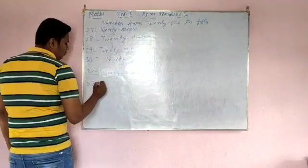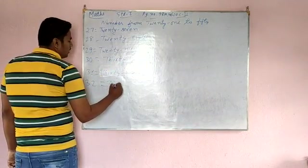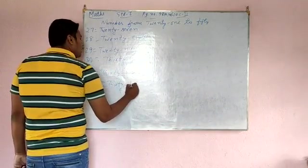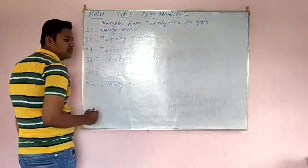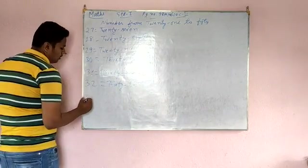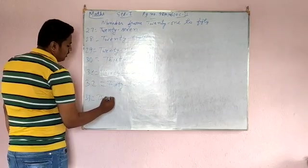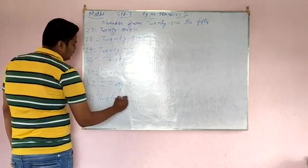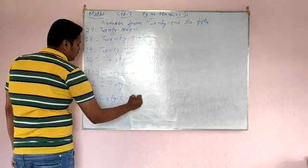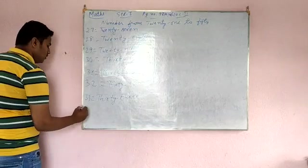After that, 32. T-H-I-R-T-Y, T-W-O, that is 32. Now 33, T-H-I-R-T-Y, T-H-R-E-E, 33.